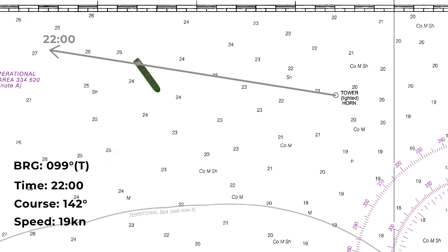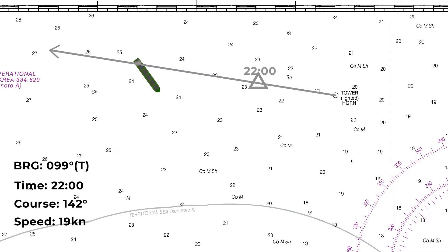Ordinarily we'd have done, for example, a star fix at 9pm or something like that, so we could have run that on and had a good guess of where we are along this line, but for the purpose of this example we're going to pretend we haven't got any of that. So instead I'm just going to make a guess as to our position. We're somewhere along this line of position — we just don't know how far along it we are, so let's stick an estimated position right here. The symbol for an estimated position is a triangle.